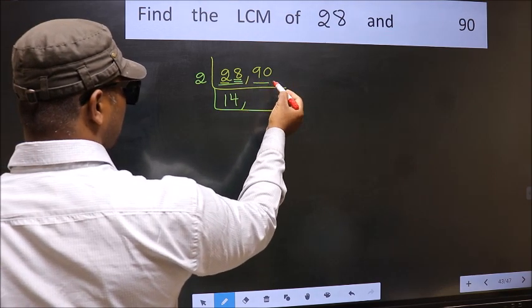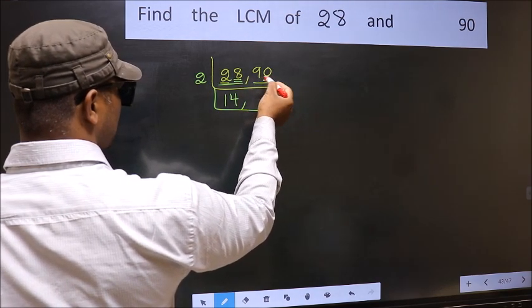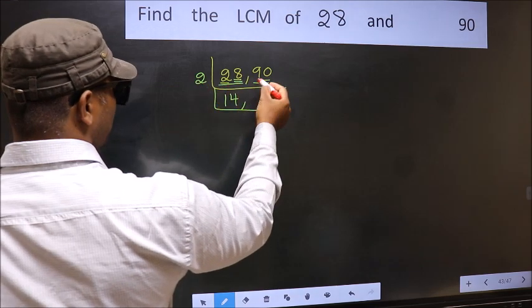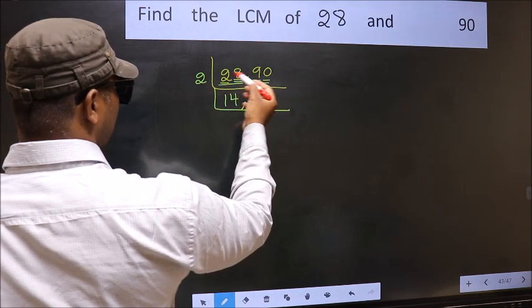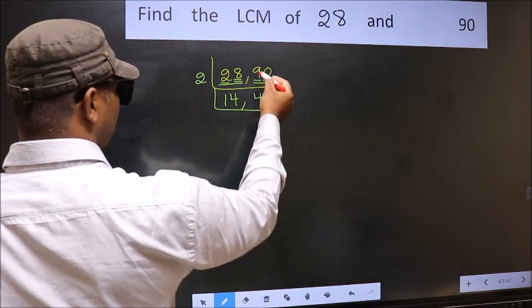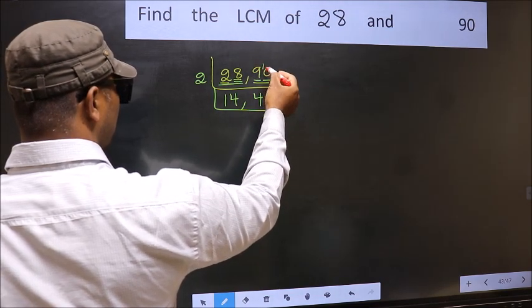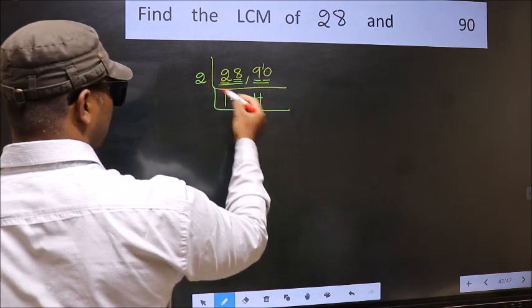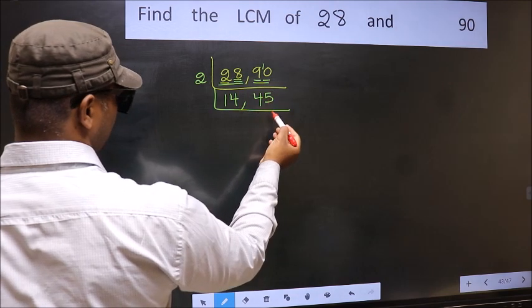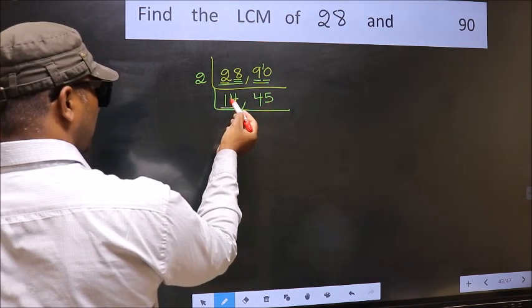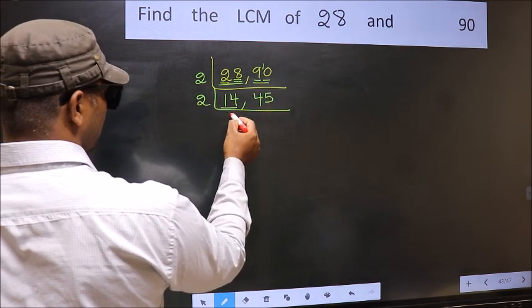Now the other number 90, last digit 0, so this is divisible by 2. First number 9, a number close to 9 in 2 table is 2, 4, 8. 9, 8, 1, 1 carried forward 10. When do we get 10 in 2 table? 2, 5, 10. Now here we have 14, 14 is 2, 7, 14.